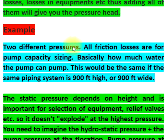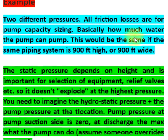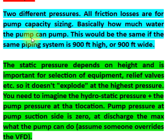All friction losses are used for pump capacity sizing — basically, how much water the pump can pump. This would be the same whether the piping system is 900 feet high or 900 feet wide.